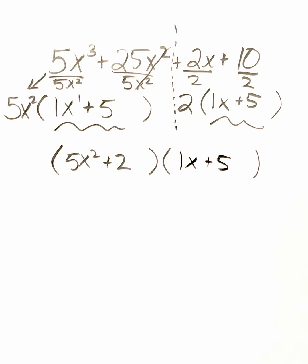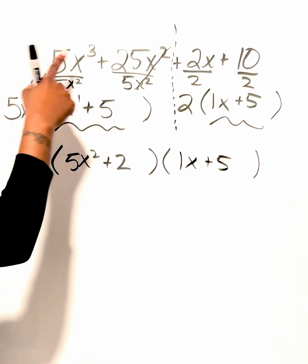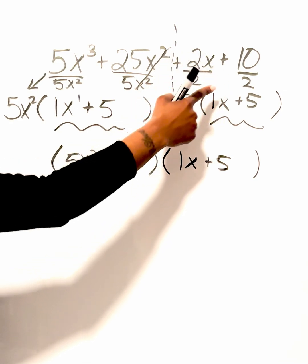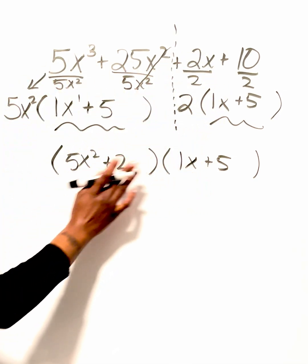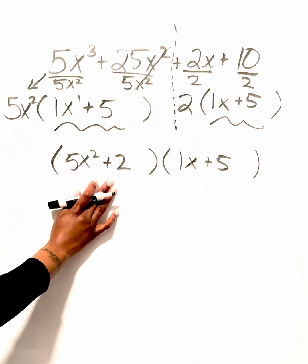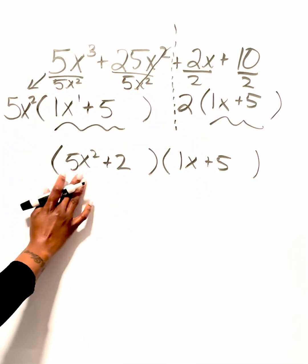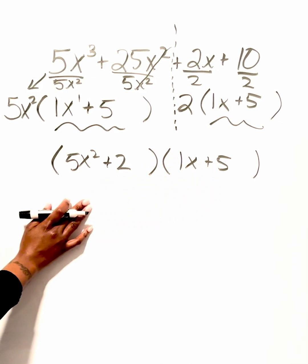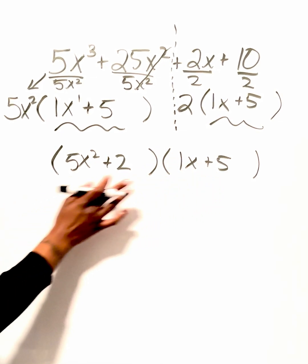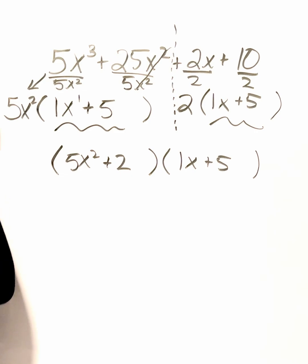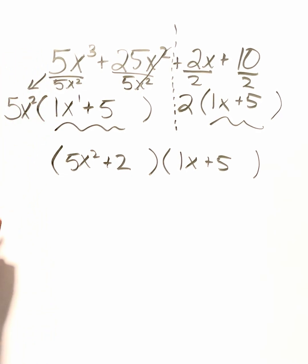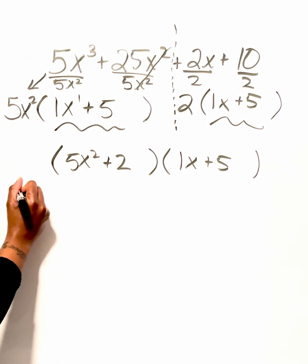So the final answer is: 5x cubed plus 25x squared plus 2x plus 10 factors to the set of binomials 5x squared plus 2, times 1x plus 5. That means if you multiply these two binomials together, you should get back the expression we started with.